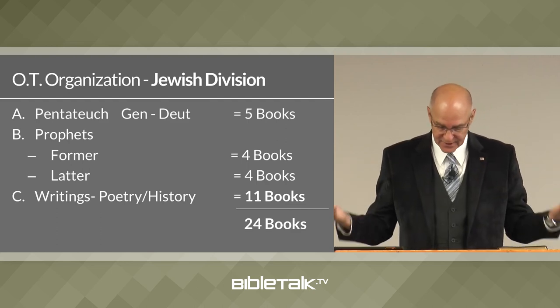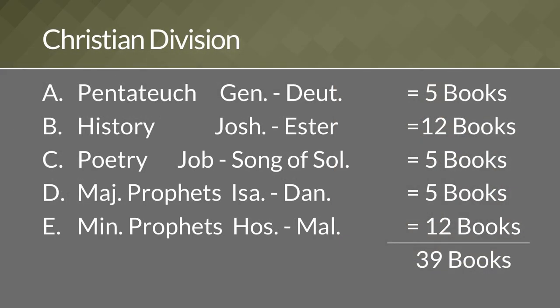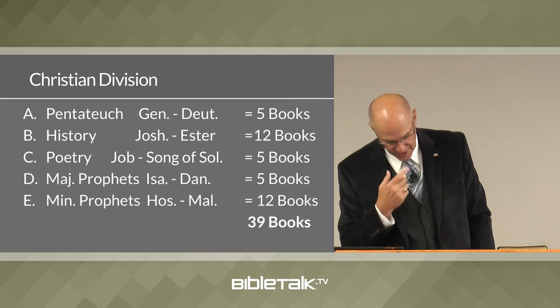Today we have exactly the same books but divide them differently into 39. We have the Pentateuch — Genesis to Deuteronomy, five books; history — Joshua to Esther, twelve books; poetry — Job to Song of Solomon, five books; major prophets — Isaiah to Daniel, five books, called major because their books are longer, not because they're more important; and minor prophets — Hosea to Malachi, twelve books. Five plus twelve plus five plus five plus twelve equals thirty-nine books.